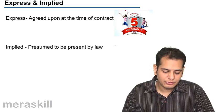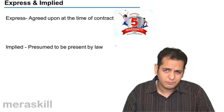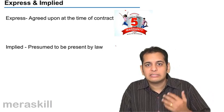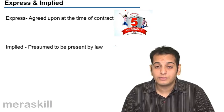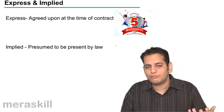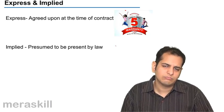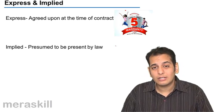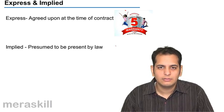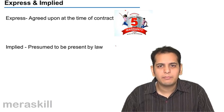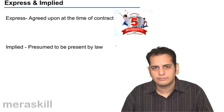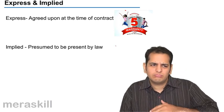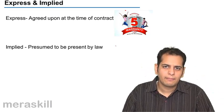Implied and express conditions and warranties. Express is something which is expressed by the two parties to the contract — the buyer and the seller. In sale of goods, the two parties are the buyer and the seller. Terms and stipulations which are agreed and accepted by the buyer and the seller at the time of the contract are called expressed terms — they may be expressed conditions and express warranties.